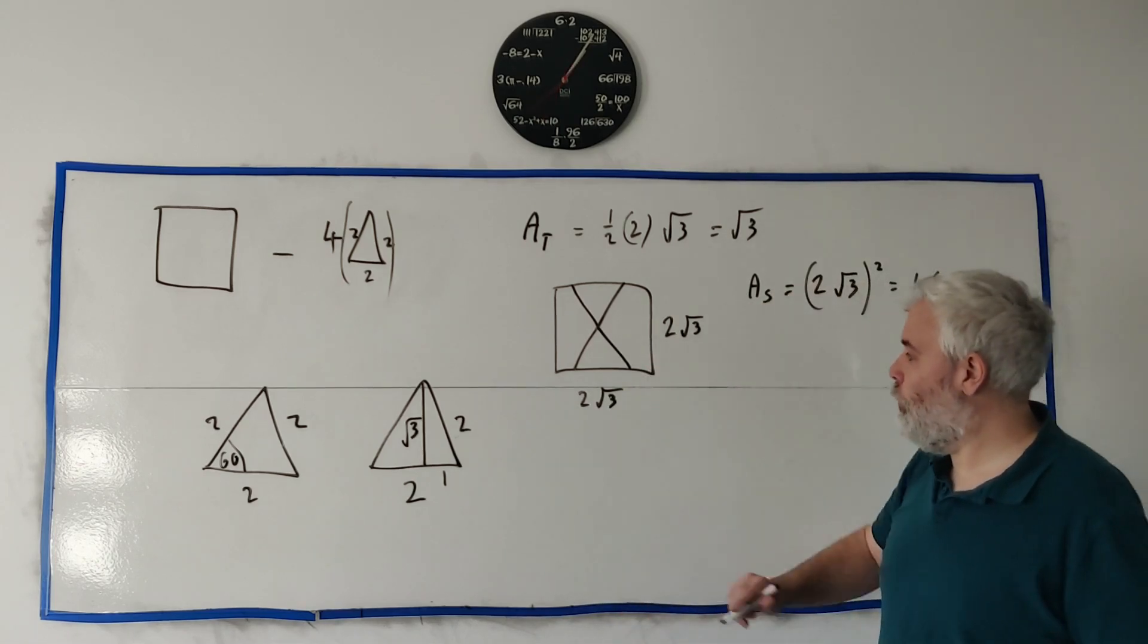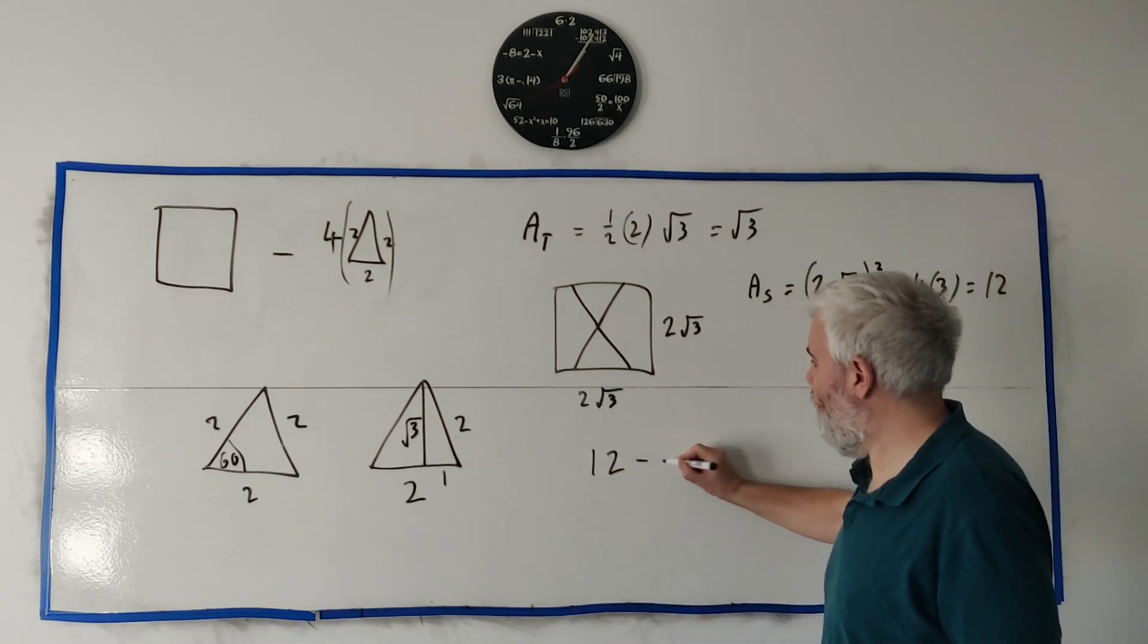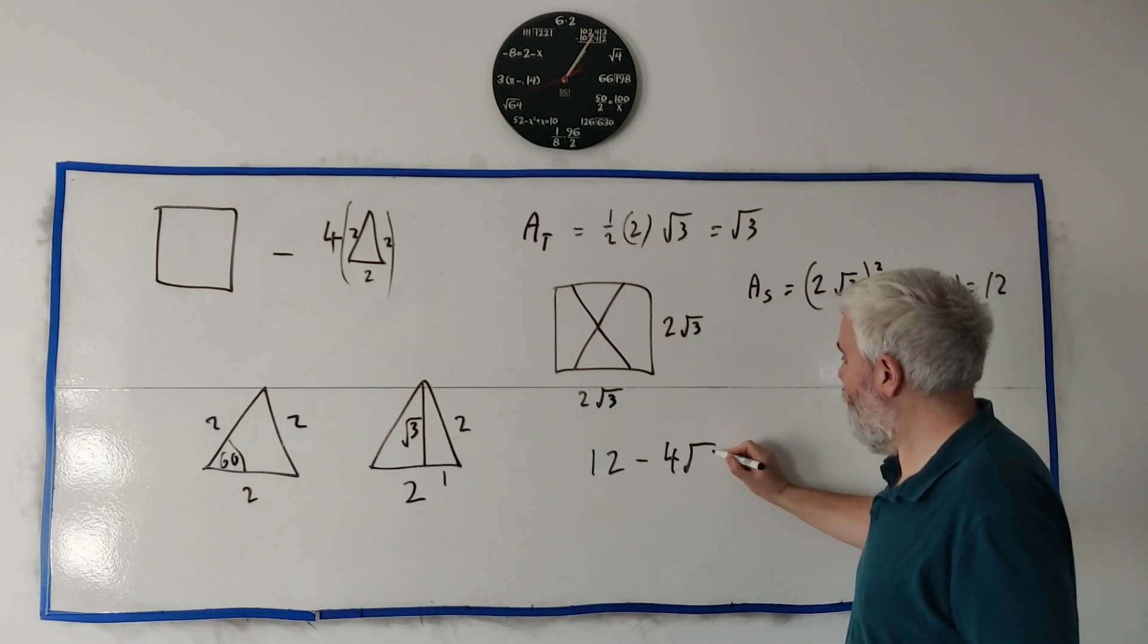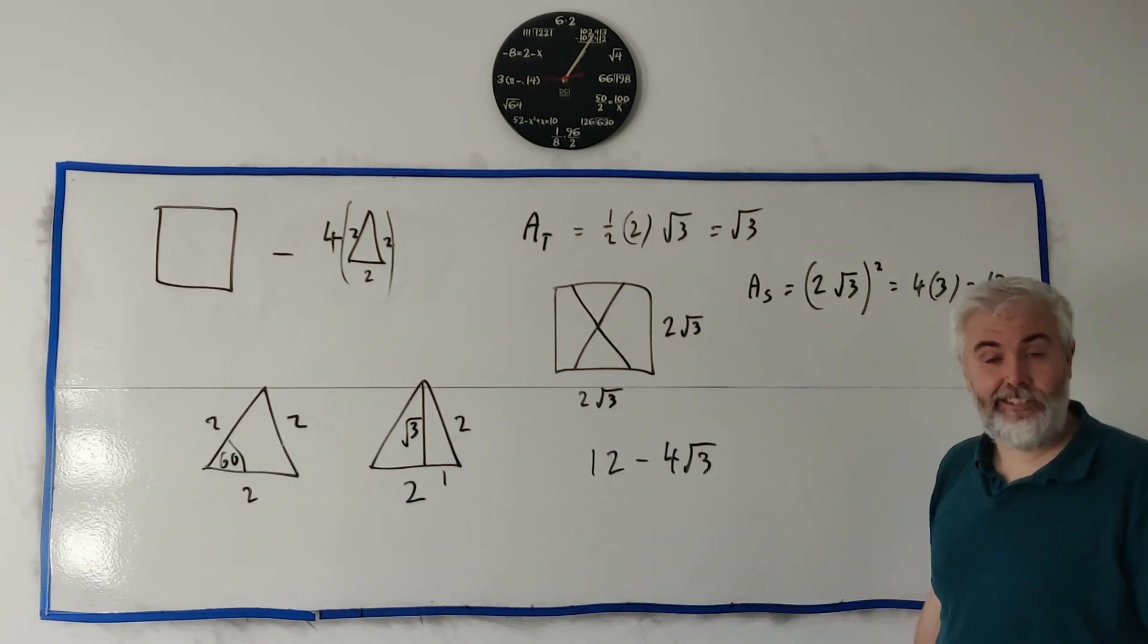Bring the whole question together. What's the blue area? The blue area is twelve minus four times square root of three. That's the answer to the question.